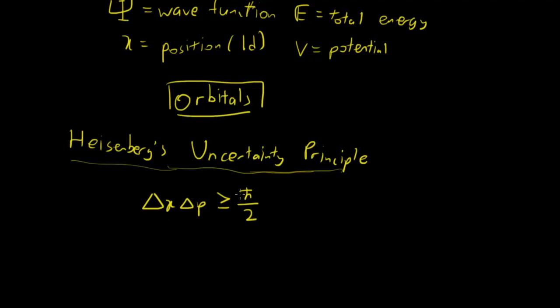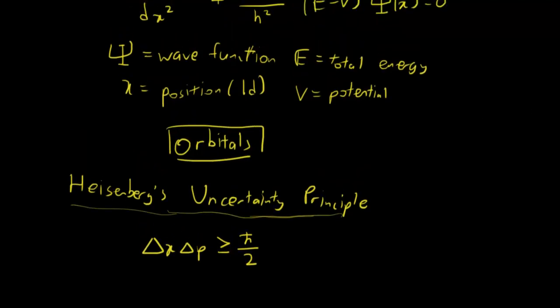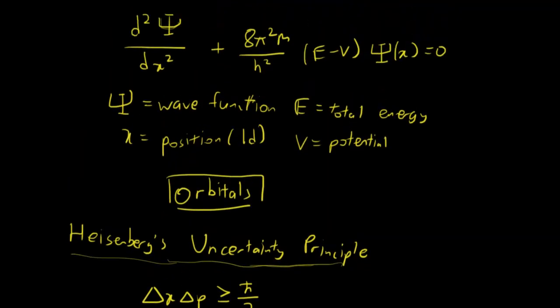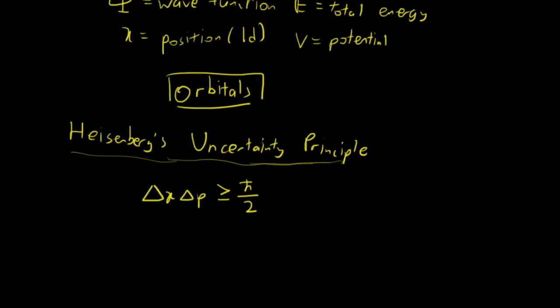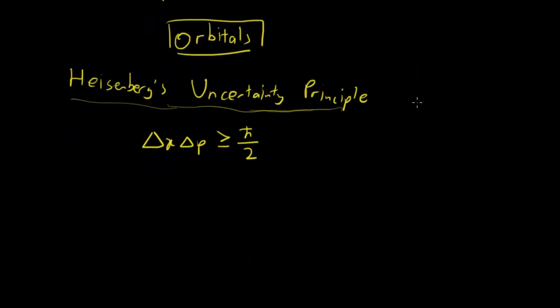And, I might talk about this in a future video. But, what this basically says is that the more you know about an object's, or a particle's position, which is x, the less you can ever know about its momentum. And, that is why you can never know exactly where an electron is on an atom, because then you'll lose all information about its momentum.